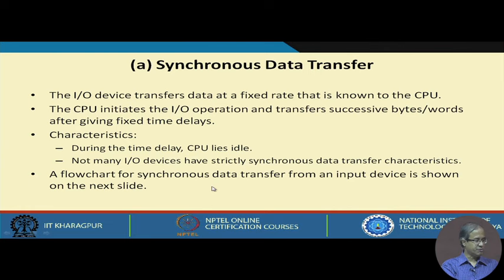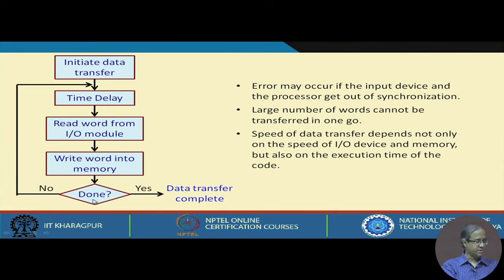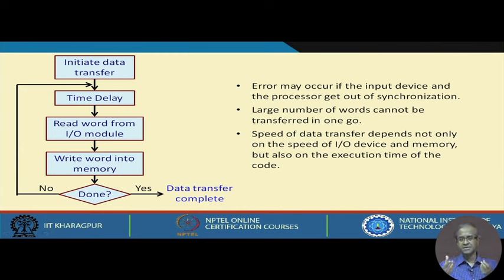In flowchart form: the CPU initiates the data transfer. Knowing the fixed rate, it waits a time delay, reads the next word from the I/O device, writes it into memory, then checks whether all words have been transferred. If not, it waits again and reads the next word. This repeats until all data is transferred, at which point the CPU continues with the next step.